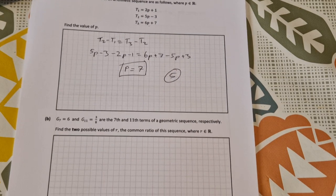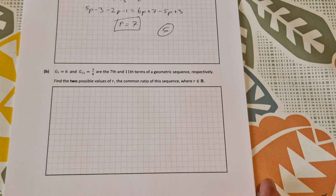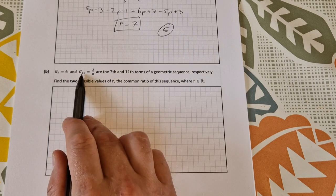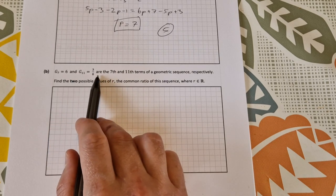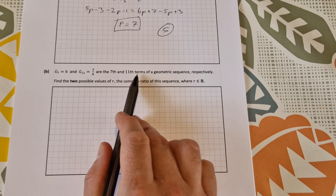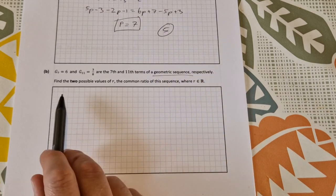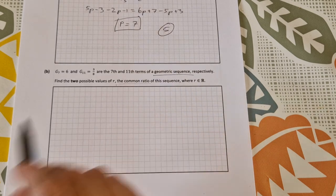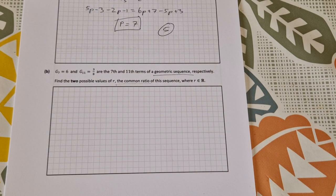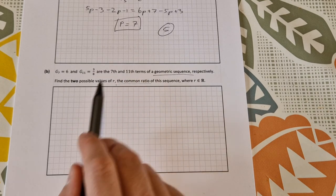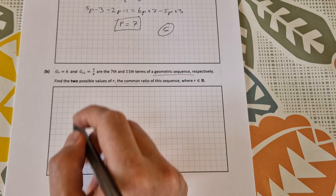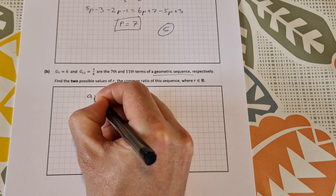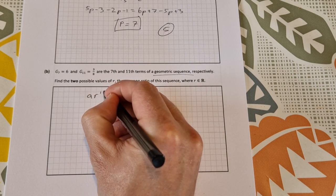Part b: g7 is equal to 6, g11 is equal to 3 over 8, are the 7th and the 11th term of a geometric sequence respectively. Find two possible values of the common ratio. If we do the general term for the 7th and the 11th terms of geometric sequence, it's a*r to the power of 10, that's the 11th term, and I can divide it by the 7th term which is a*r to the power of 6.